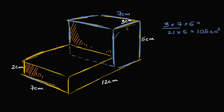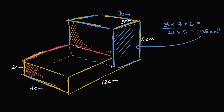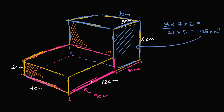This blue rectangular prism has a volume of 105 cubic centimeters. Now we can separately figure out the volume of what I'm highlighting in magenta. If this were transparent, you'd see this part back here. Its height is two centimeters, and its depth is seven centimeters. For its length: the whole thing is 12 centimeters, and from here to here is three centimeters, so this piece must be nine centimeters.